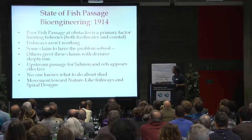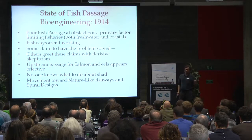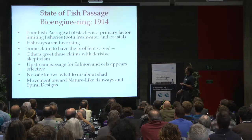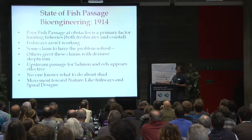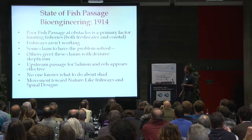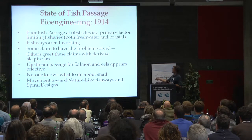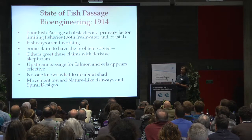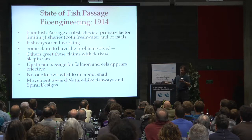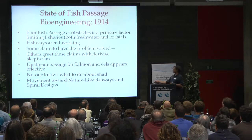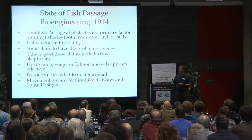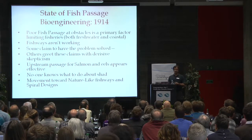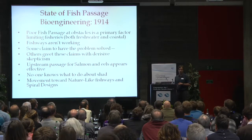To sum up the state of fish passage in 1914: Rogers, it turned out, was wrong. We had poor fish passage at obstacles, fishways weren't working. Some claimed to have the problem solved, but the broader community recognized that was not really true. Salmon and eels were passing these structures, so there was some success. But shad were really a problem, and many other species weren't using these. In response, there was a movement toward nature-like fishways and spiral design — some of the innovative designs showing up in the past couple of decades were also being applied 100 years previously, largely because of this recognition of the failings of technical fishways.